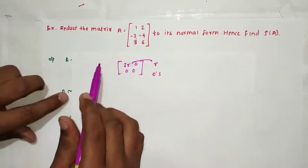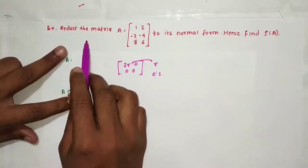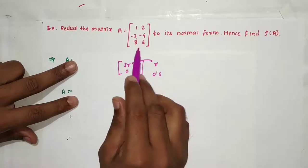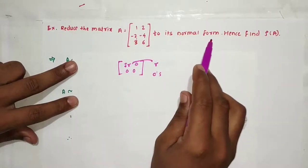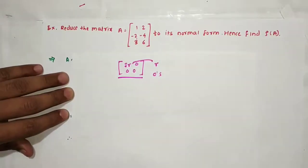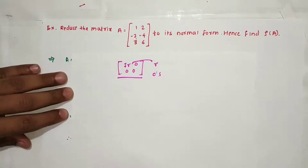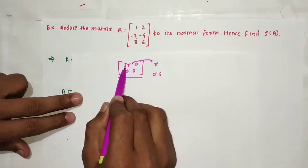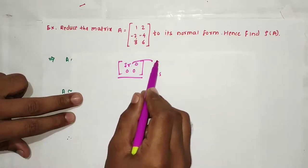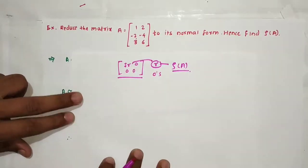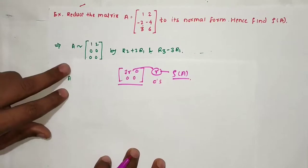Let's start with the second example. We are given the matrix A = [1, 2, -2; -4, 3, 6]. The task is to reduce this matrix to its normal form. The normal form converts A to an identity matrix of order R, where R is the rank of A. Let's start with the solution.